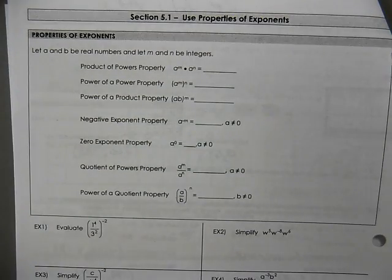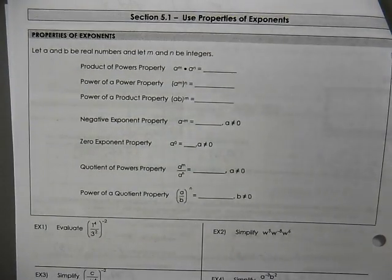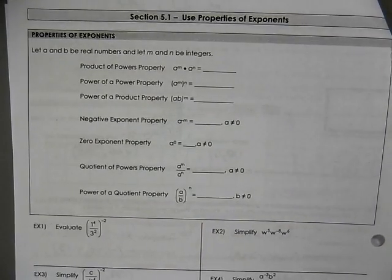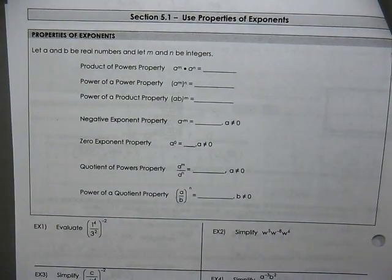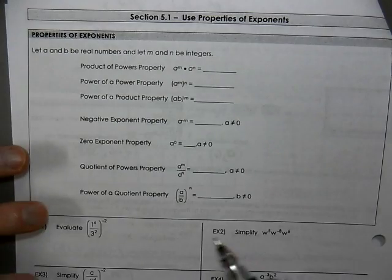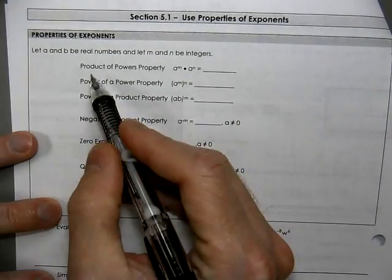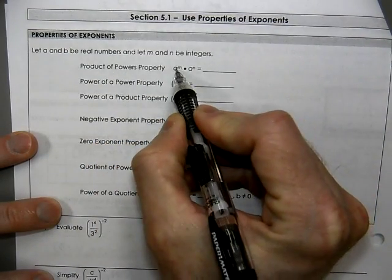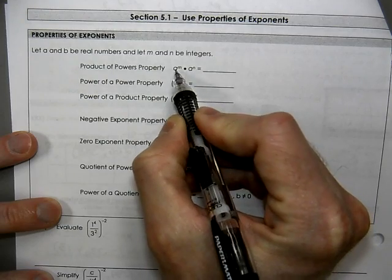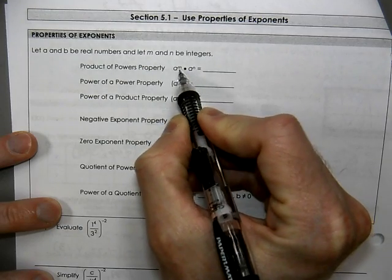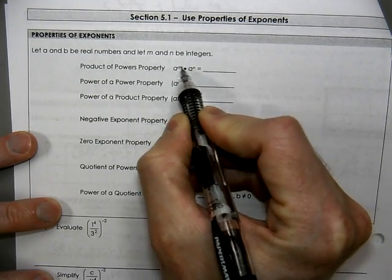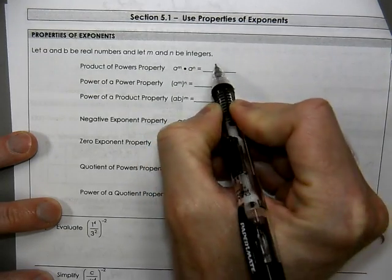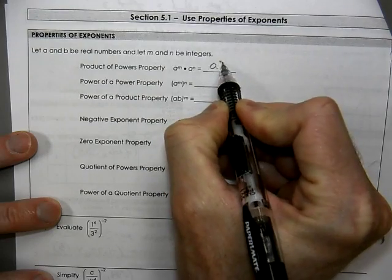This is Algebra 2 with Trigg, Chapter 5.1. We're working on properties of exponents. One of these is the product of powers property. The A represents the base, so when you're multiplying two bases that are the same, you add the exponents.